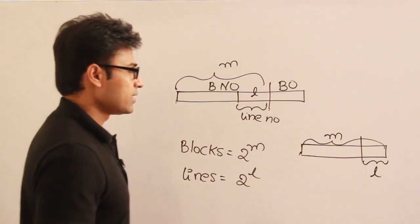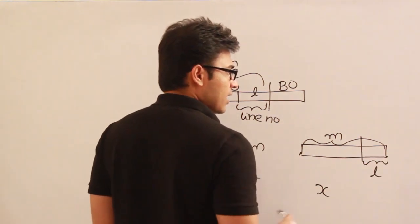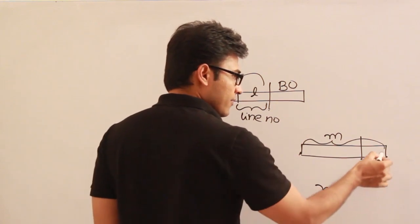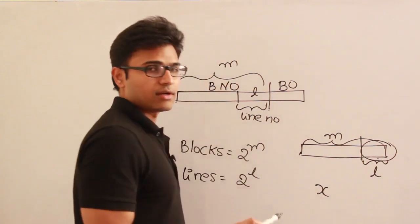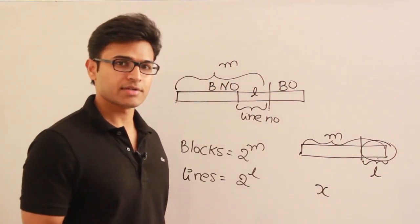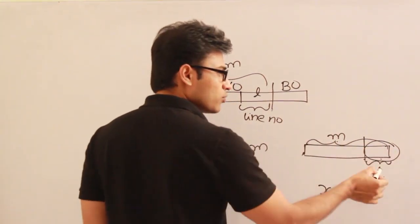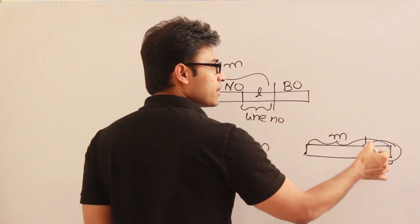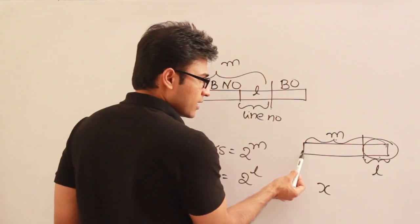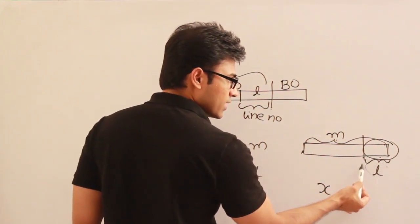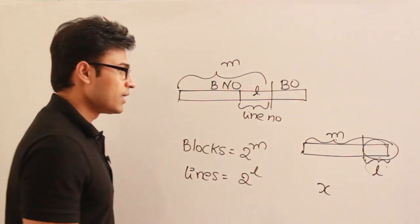If this m-bit number represents some number x, then the least significant l bits is nothing but the remainder when x is divided by 2 power l. Whenever we divide any m-bit number by 2 power l, the remainder is nothing but the least significant l bits.